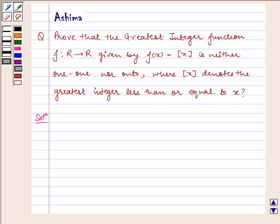Hello and welcome to the session. Let us discuss the following problem today. Prove that the greatest integer function f: R → R given by f(x) = [x] is neither one-one nor onto, where [x] denotes the greatest integer less than or equal to x.